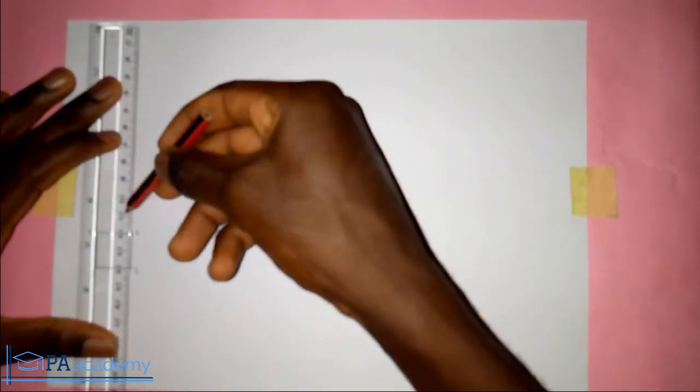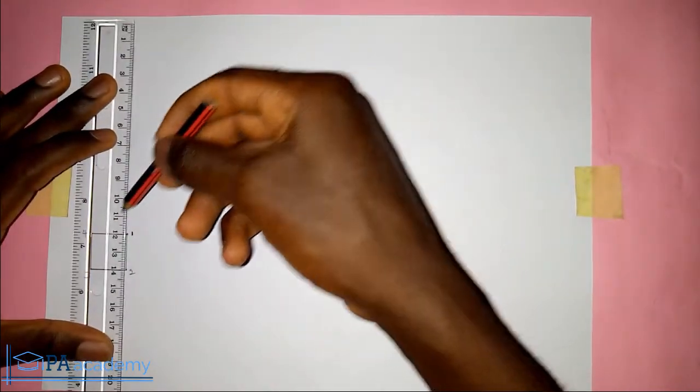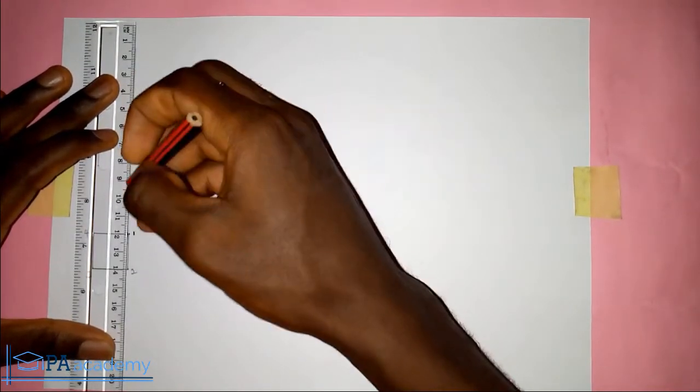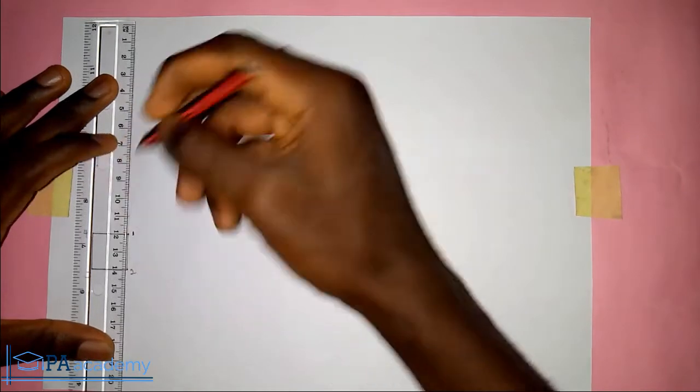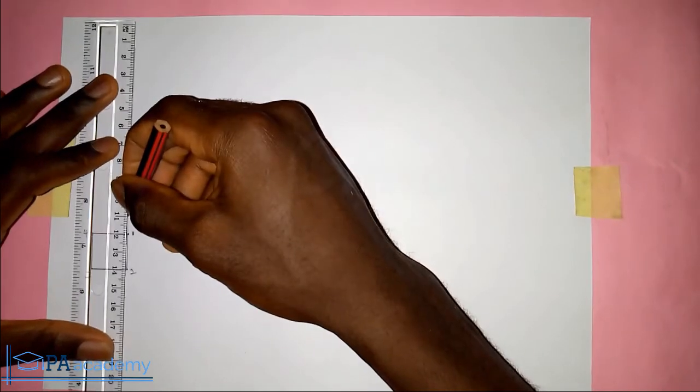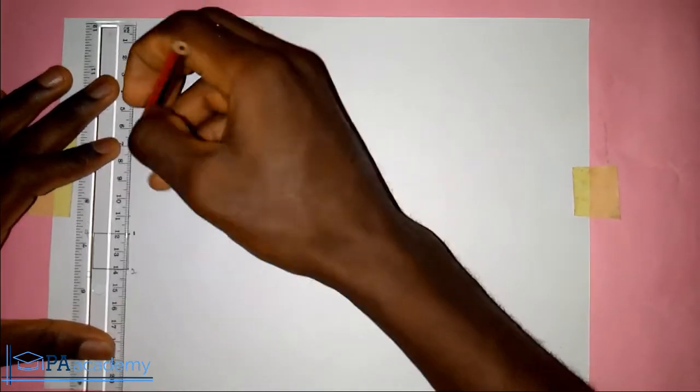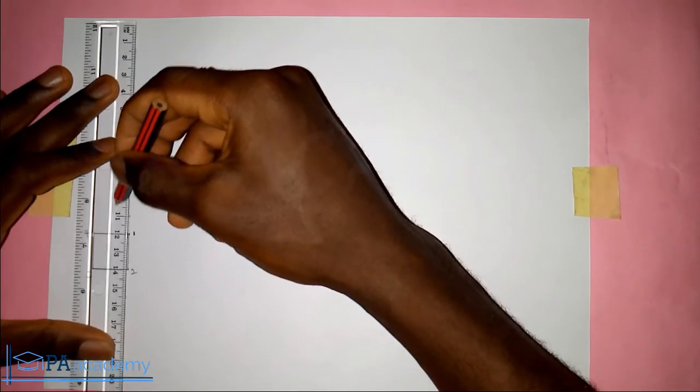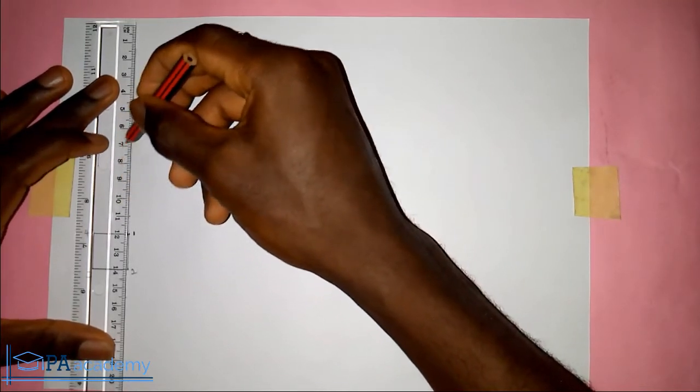So having done that, I'll leave a space of one centimeter in between, and then I'll draw the height. I want to use the height of four centimeters. So this will be 1, 2, 3, 4.